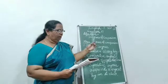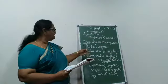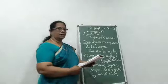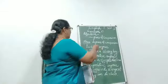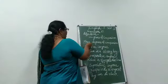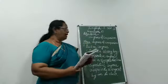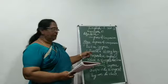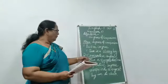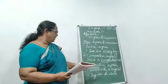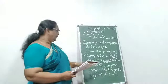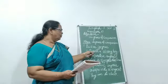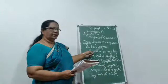How many kinds of comparisons are there? There are three degrees of comparison. Which are they? The first one is positive degree, the second is comparative degree, and the third is superlative degree.